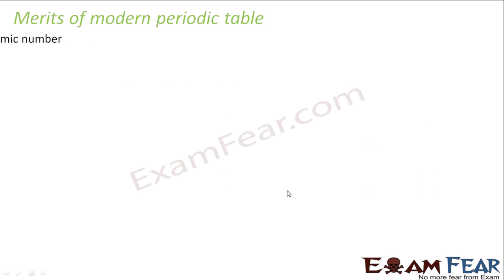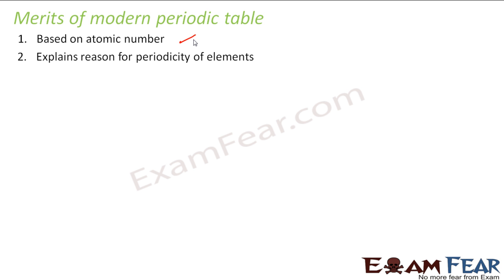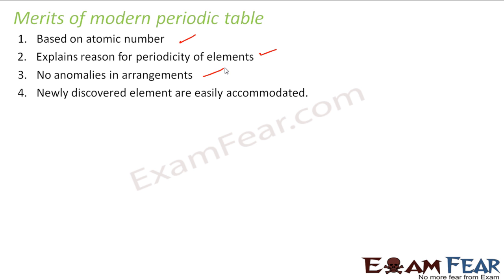Let's discuss some merits of the modern periodic table. The first thing is it's based on atomic number rather than atomic mass, which Mendeleev's was based on. It explains reasons for the periodicity of the element. There is no anomaly found in the arrangements. Newly discovered elements can easily be accommodated.